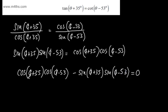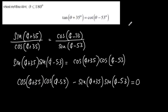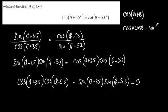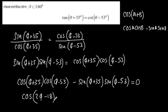Now we can use one of our addition formulae. We know that cos of a plus b can be written as cos(a)cos(b) minus sin(a)sin(b). Adding these two terms together using that formula, we get cos of 2 theta minus 18 degrees, and that equals zero.